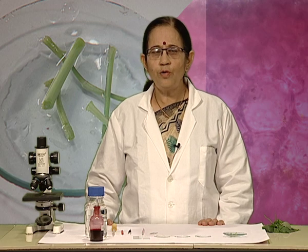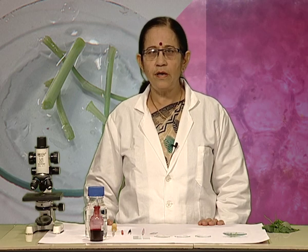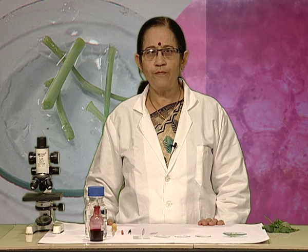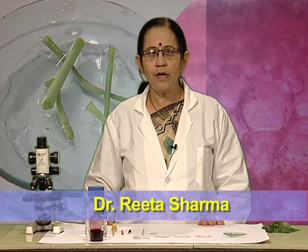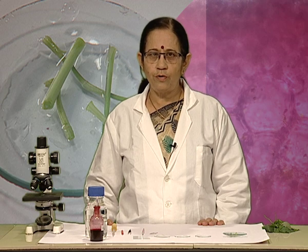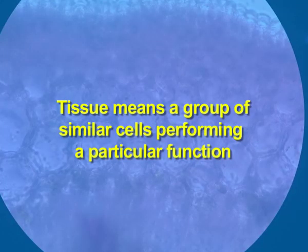Students, you have already observed plant cells in onion peels where you found most of the cells were of uniform shape and structure. Today, we are going to talk about and study about tissues. What is meant by tissues? Tissue means a group of similar cells performing a particular function.